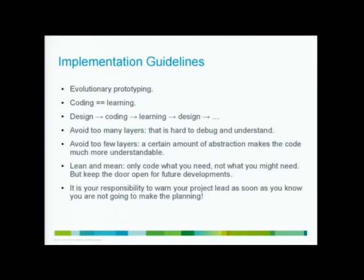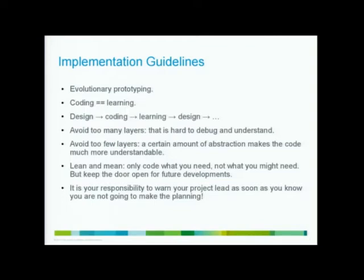The other thing is layers — it's a bit of an art. Too many layers makes things very difficult to debug and understand. Too few layers and you get huge functions that do everything including the kitchen sink. The right number is a learning curve — it comes with experience. The more I learn about programming, the more I hate too many layers. It's very hard to debug and very hard to follow the control flow through a program.